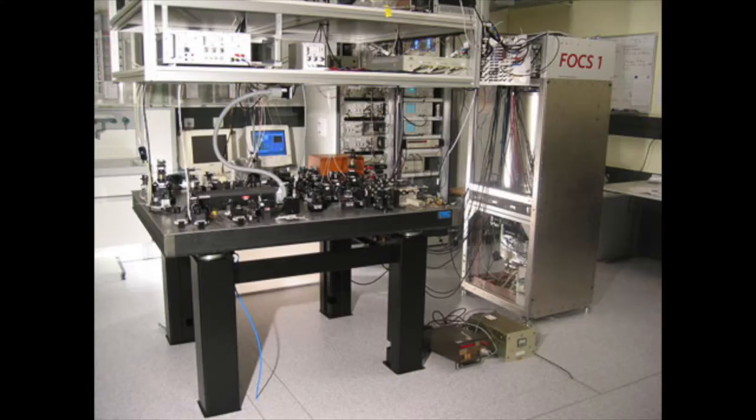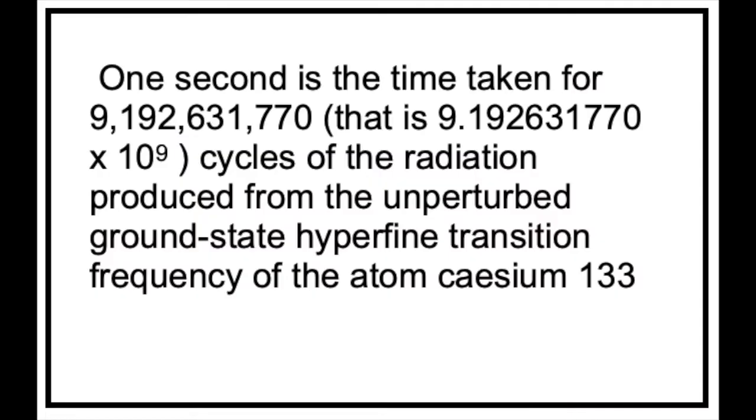And finally, this brings us on to atomic clocks, which are the basis of the latest definition of a second. This works by measuring the oscillations of charge between two slightly separated energy levels within an atom. This Swiss machine has an uncertainty in its accuracy of only one second in 30 million years.